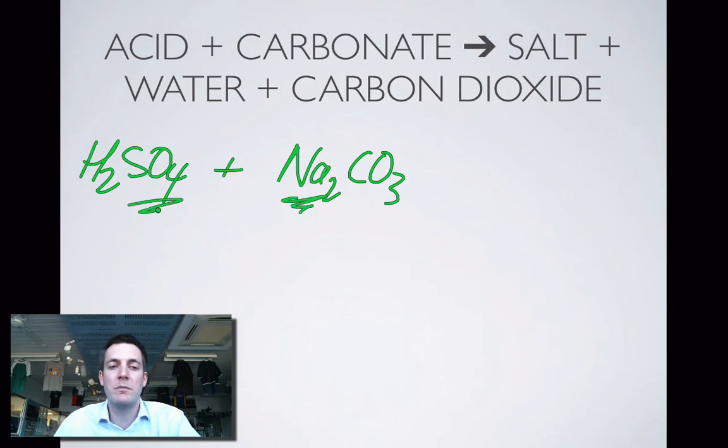We're going to take the metal from the carbonate, sodium, and combine it with the negative ion from the acid. So sodium sulfate would be my salt here, plus water plus carbon dioxide. Balance the equation, get rid of spectator ions.